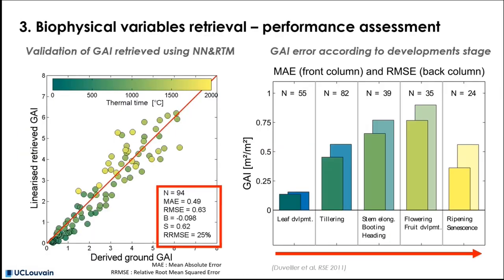The performance can be further understood by using a set of metrics, like the mean absolute error, the root mean square error, the bias, the error standard deviation, or the relative root mean square error. The graph on the left uses dot colors to indicate the crop development stage corresponding to the sum of temperature along the season.